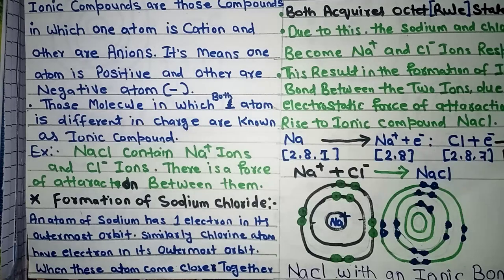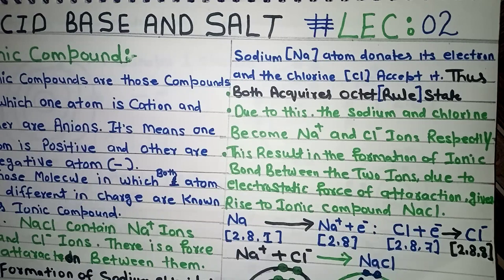Next topic is the formation of sodium chloride. An atom of sodium has one electron in its outermost orbit. Similarly, a chlorine atom has seven electrons in its outermost orbit. When these atoms come close together, the sodium atom donates its electron and the chlorine atom accepts it.